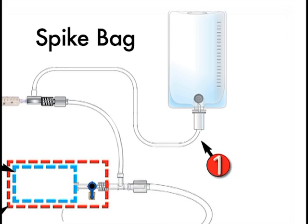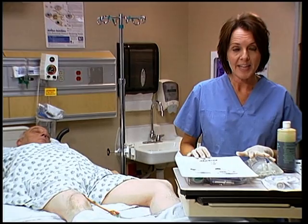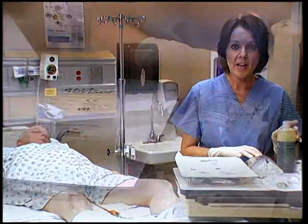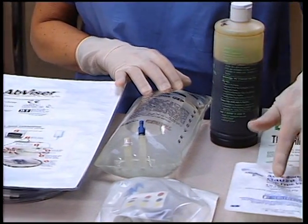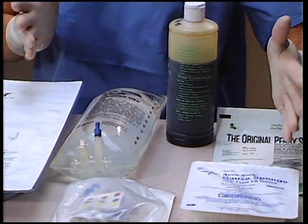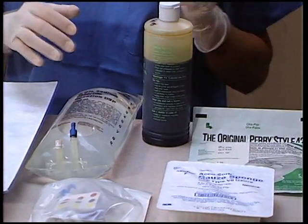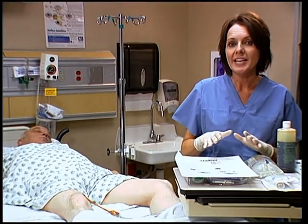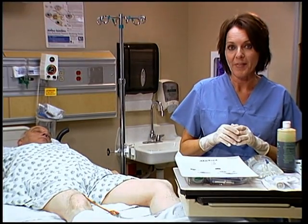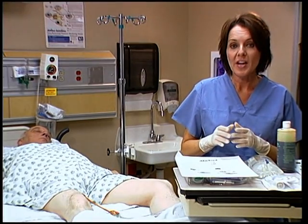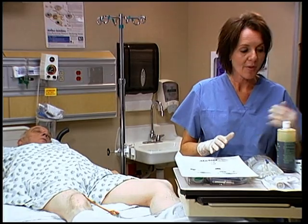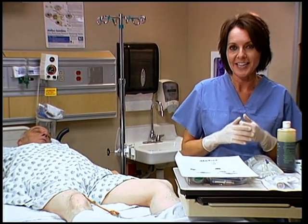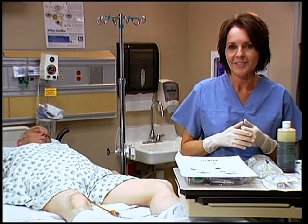To set up the AbVisor, you will need a 1-liter saline bag and an antiseptic solution, a 4x4 tray with sterile gloves, and a standard arterial line transducer. If you intend to patient-mount the transducer, you will also need a 4x4 pad and some tape for attaching the transducer to the skin of the patient.